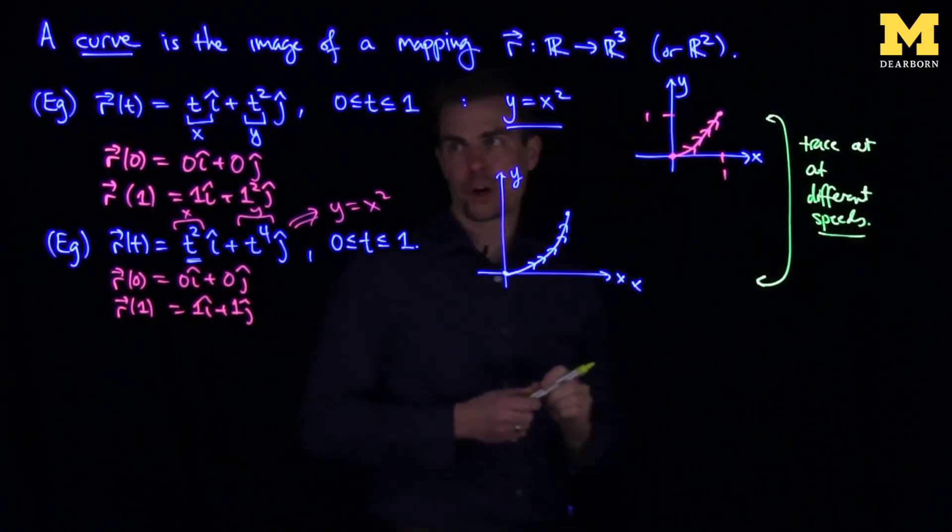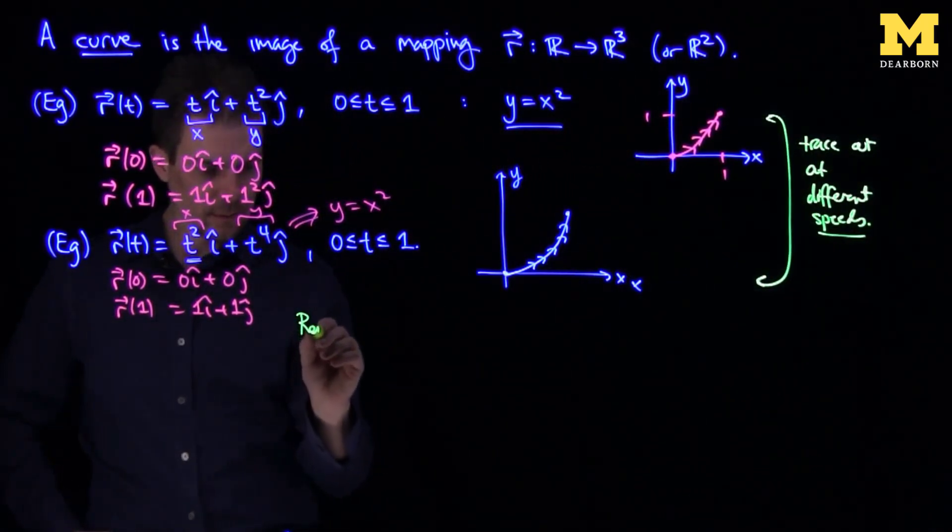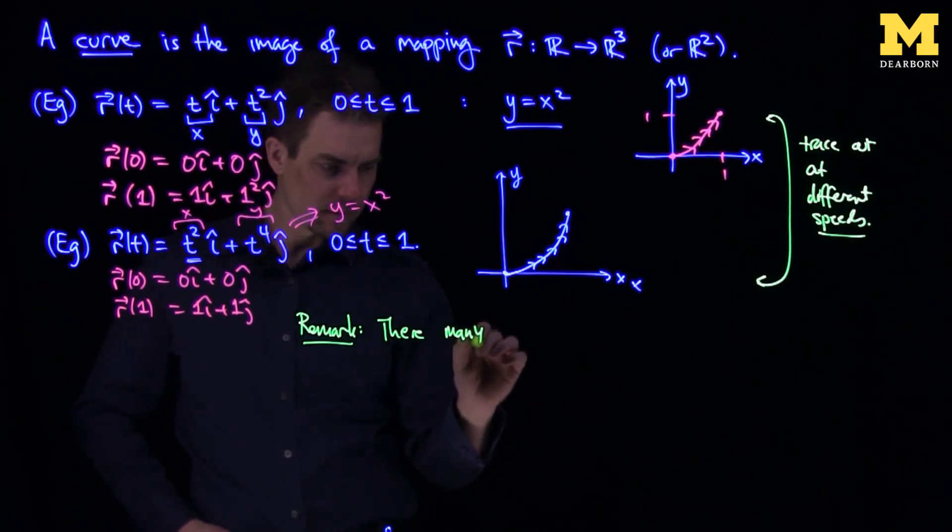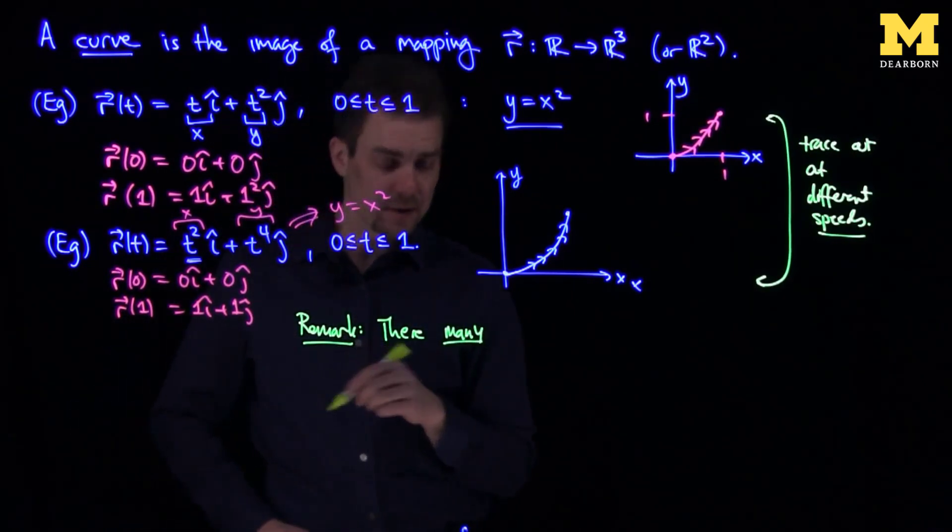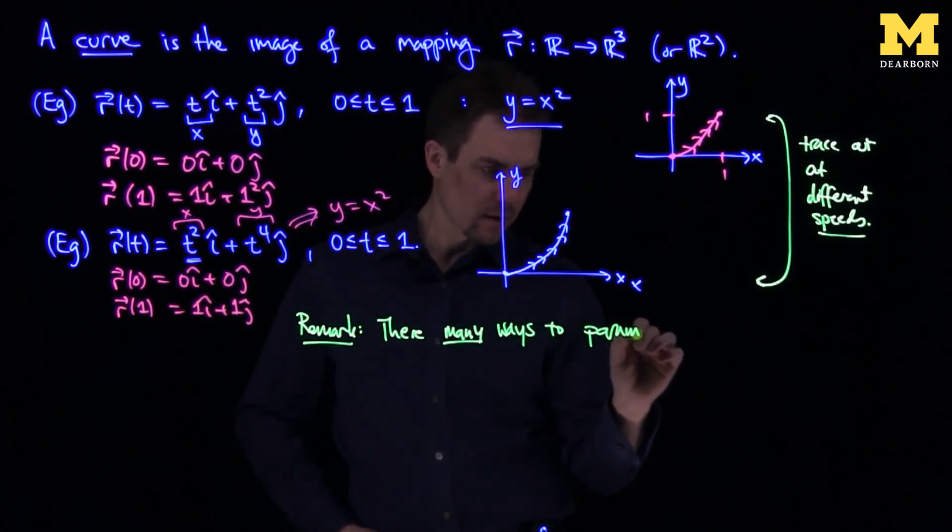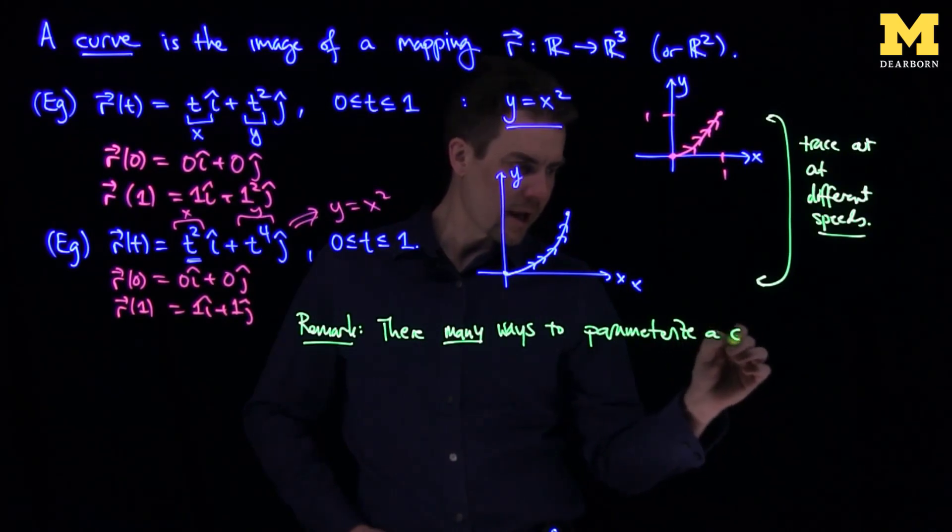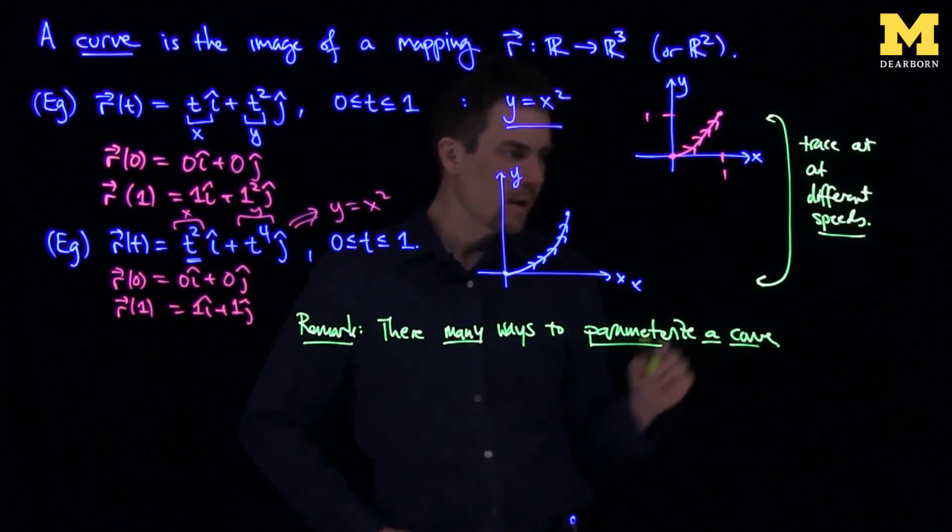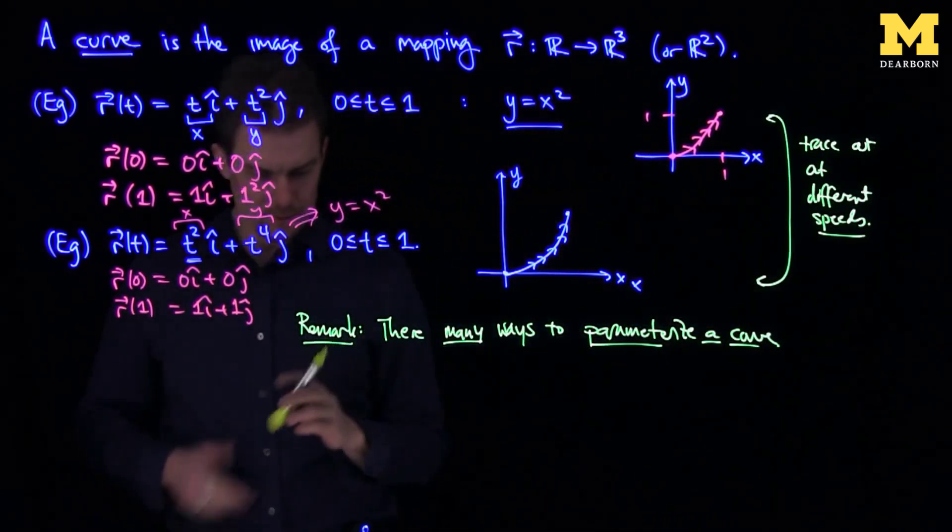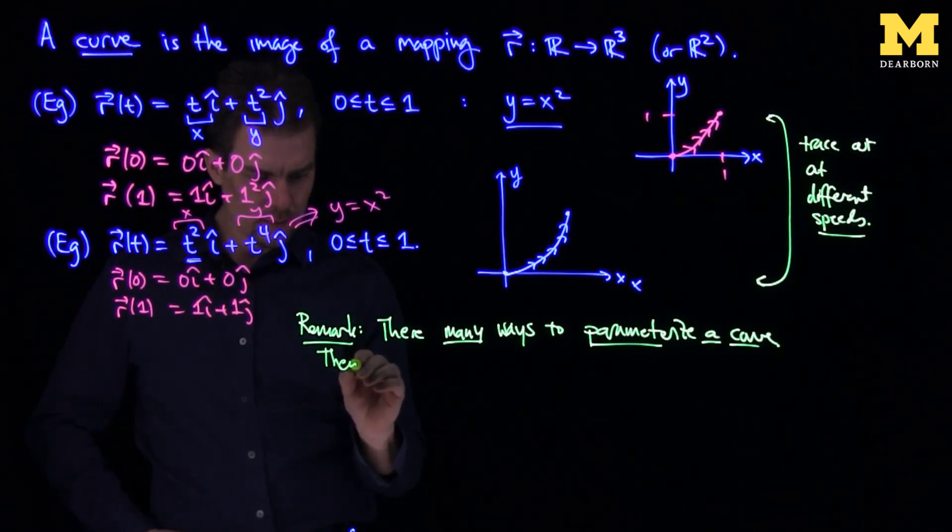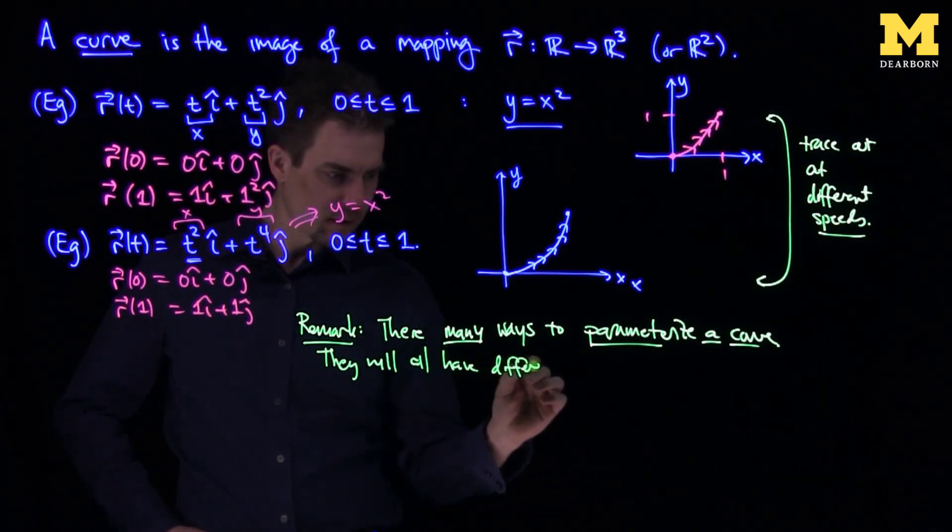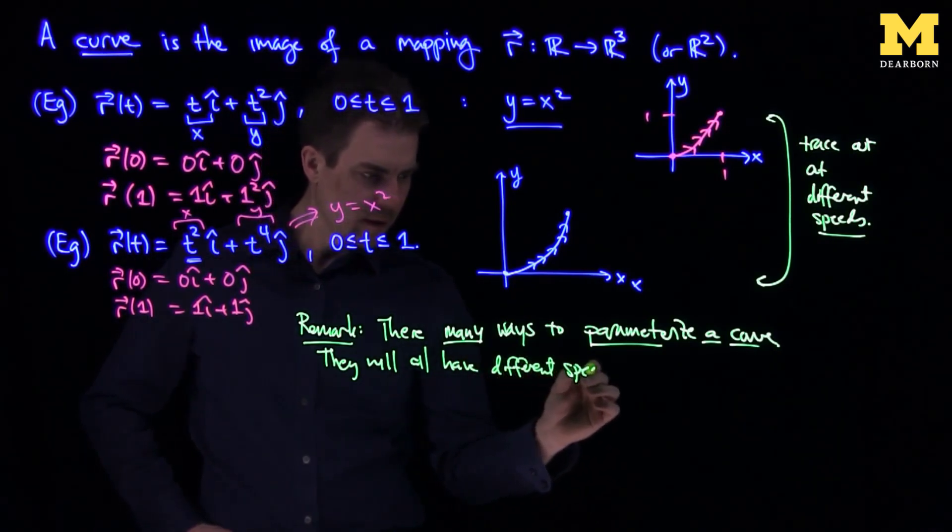And this simple example shows us, as a remark, there are many ways, namely infinitely many ways, to parameterize a curve. And all of these parameterizations will have different speed.